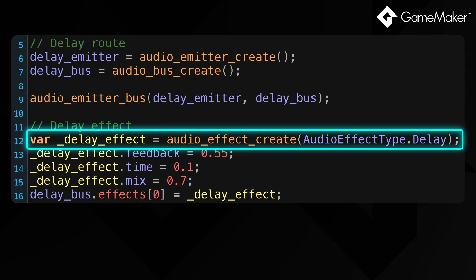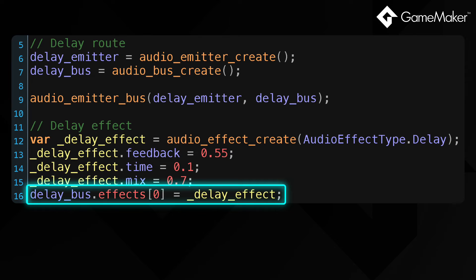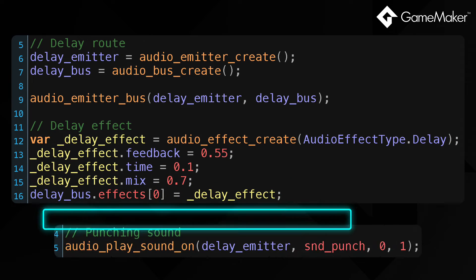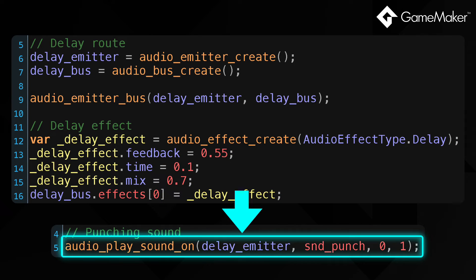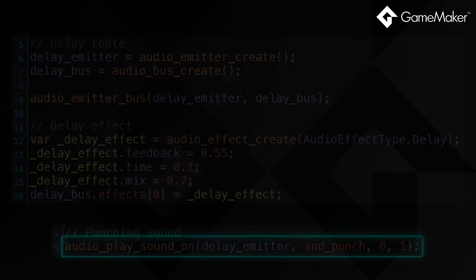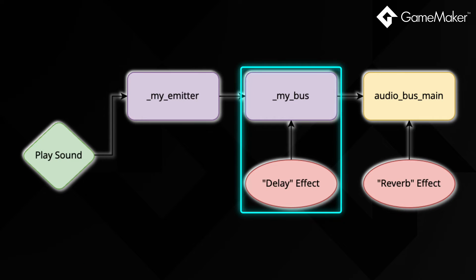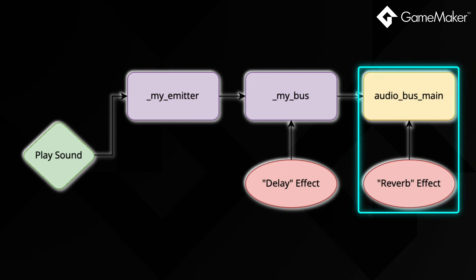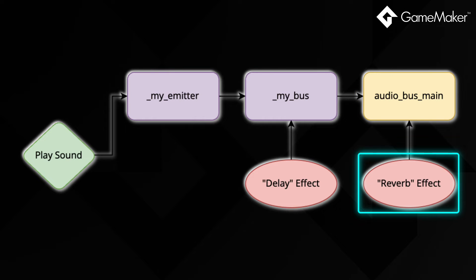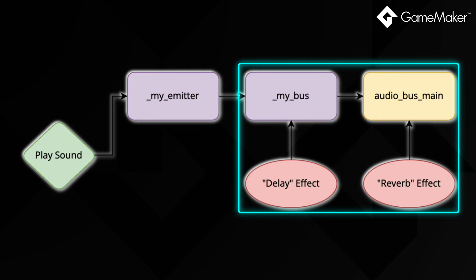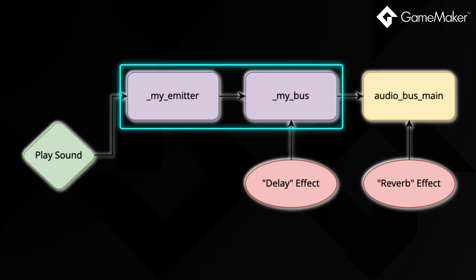So if you want to play a sound with the delay effect, you can apply the delay effect to your new bus, and then play your sound through your new emitter. In the end, even your own custom buses go through the main audio bus. So if you've got a reverb applied to that main bus, you'll hear it on all your audio, even the ones that come through your own buses.